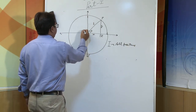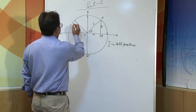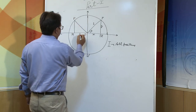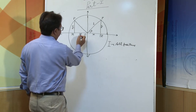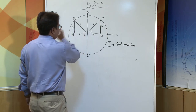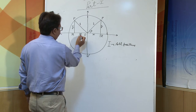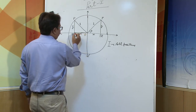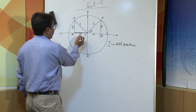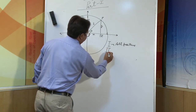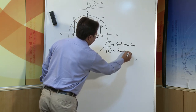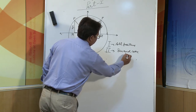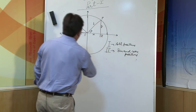Now let us move to the second quadrant, where the angle is between ninety and one-eighty degrees. Here the length OM is x, which is negative, and y is positive. Because x is negative, any trigonometric ratio involving x will become negative. On this basis we find that in the second quadrant, except sin and cosec, all values become negative — sin and cosec are positive.